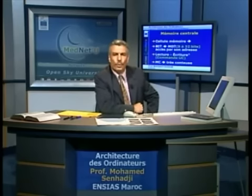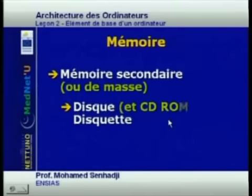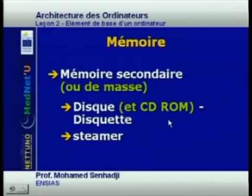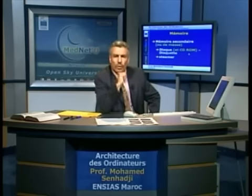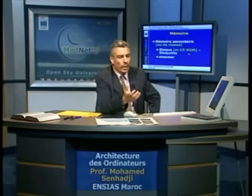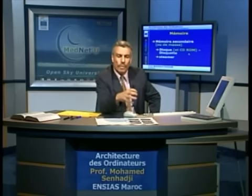The size of central memory has always been a big problem for designers, because the more important the size of memory, the more performant the machine, since it can lodge a larger volume of data during execution without having to cut it into pieces. This is why it is very costly. There are other forms of memory: secondary memory or mass memory, composed of disks, CD-ROMs, streamers, or diskettes. These are external compared to the central unit. Their size is much more important than central memory because the central memory cannot hold all user programs, so we are obligated to put them in mass memory.